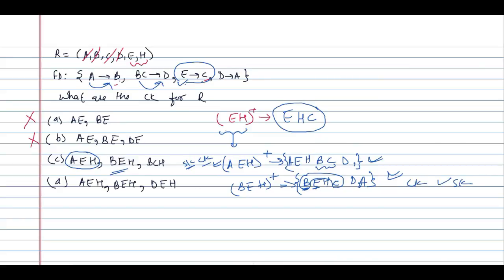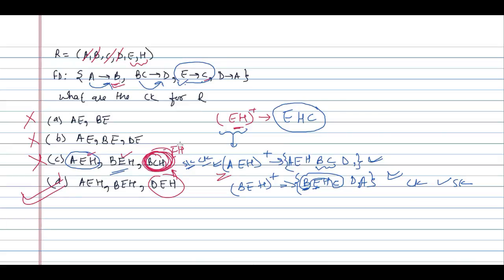The next option is BCH. BCH does not contain E or H — we can clearly see it does not contain E. I could have directly said option C is wrong without solving, because any key must contain E and H. BCH does not have E, so it can never be a super key or a candidate key. Therefore option C is rightly ruled out and option D is correct.